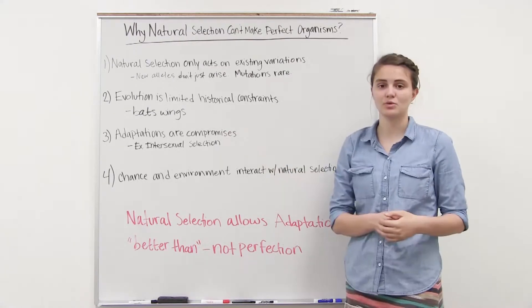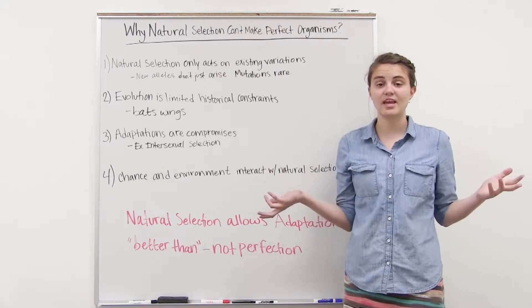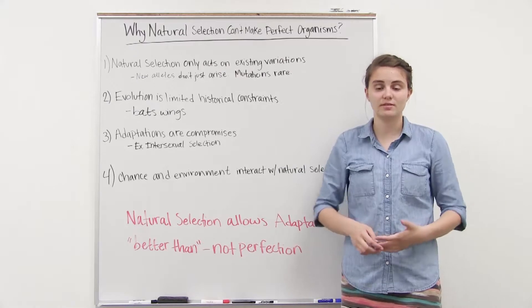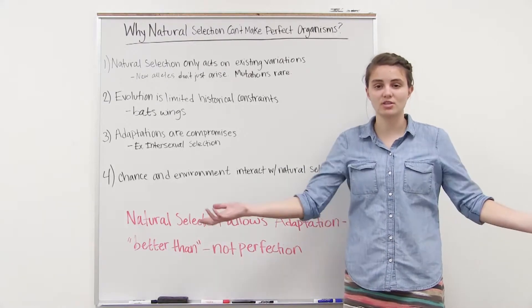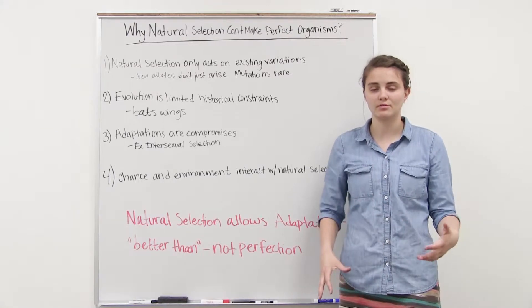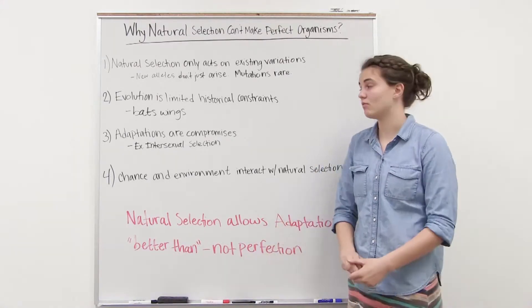An example is the bat's wings. It may have been advantageous to just completely scratch off the bat's ancestors' limbs and develop wings, but they're not just going to scratch off the limbs it has been developing over thousands of years. It's going to adapt those limbs eventually so that they will form wings.